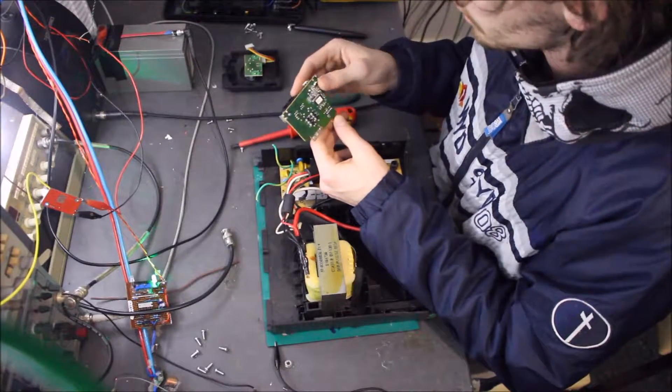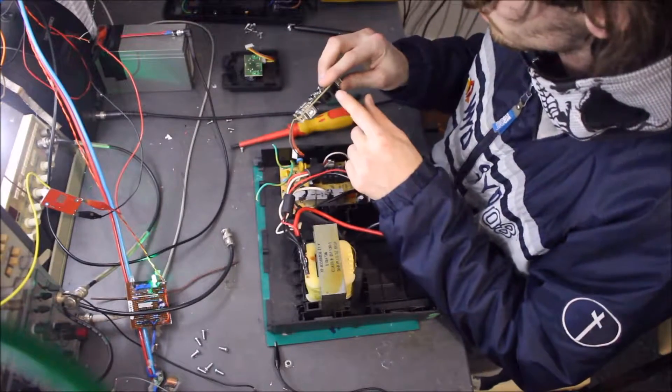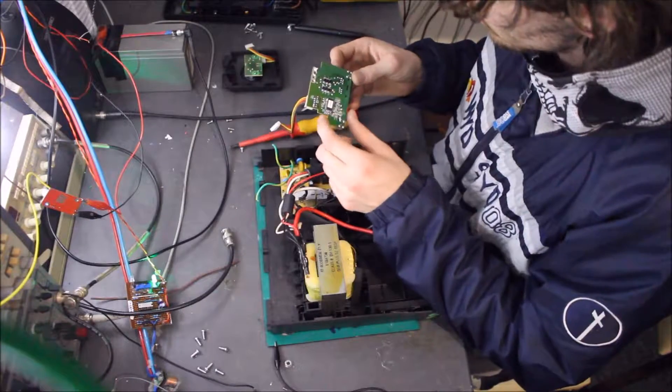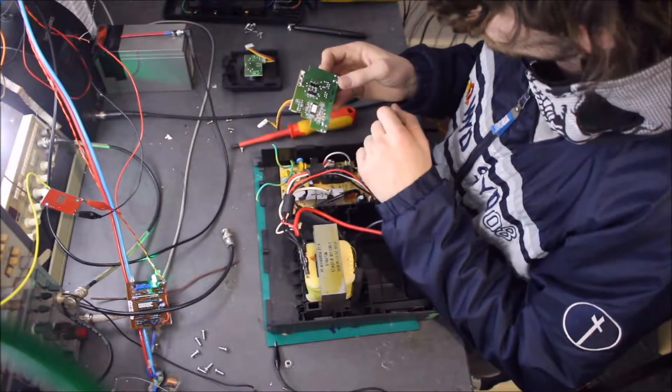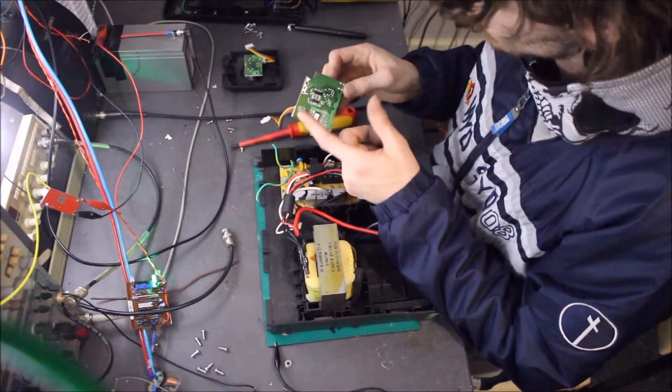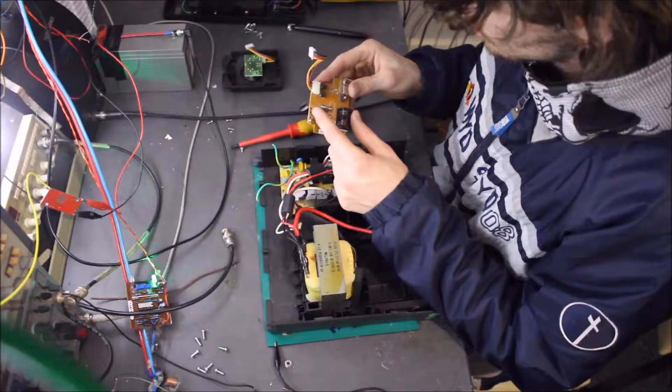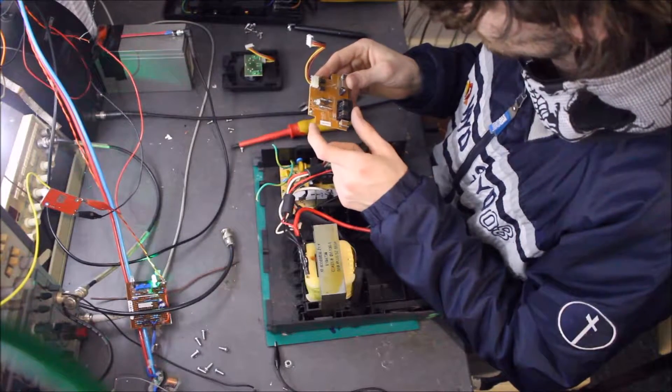And then just the ethernet surge protector. So yeah, pretty standard - you've only got six diodes. But okay, six diodes and then it's got a glass discharge tube. So that's cool, couple of fuses - it's always nice.